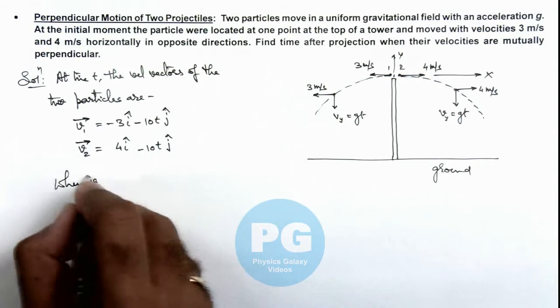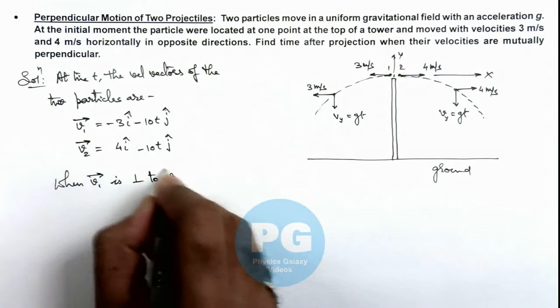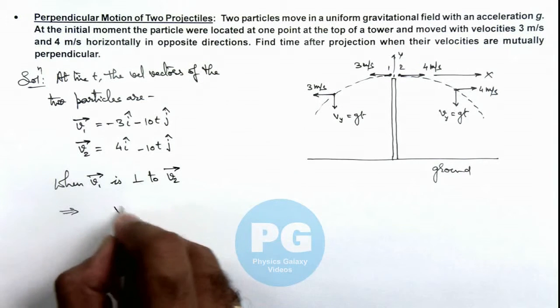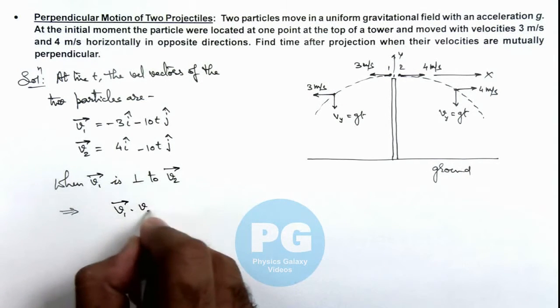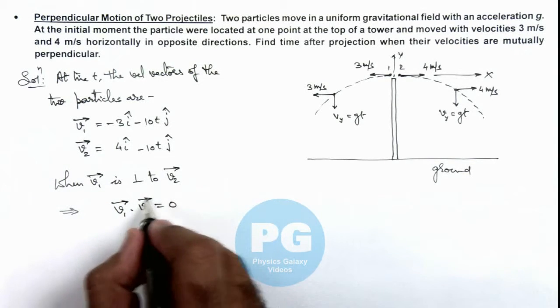When v1 vector is perpendicular to v2 vector, this implies we can use v1 vector dot v2 vector is equal to zero, as if the two vectors are perpendicular their dot product will be zero.